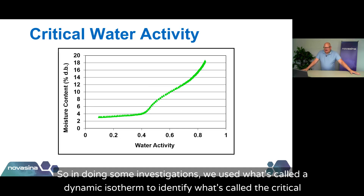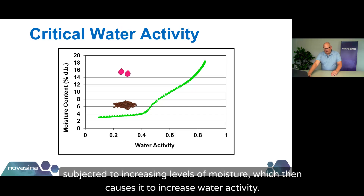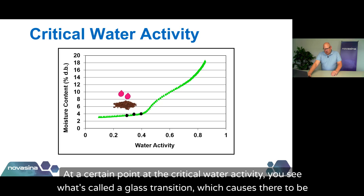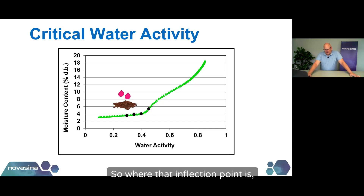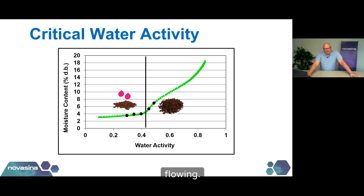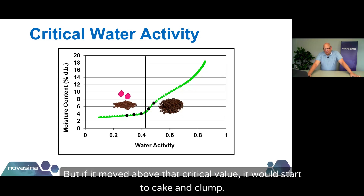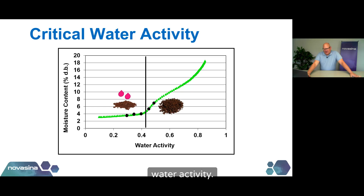Through investigation, we used what's called a dynamic isotherm to identify what's called the critical water activity. A free-flowing product is subjected to increasing levels of moisture, which causes it to increase water activity. At a certain point — the critical water activity — you see what's called a glass transition, which causes increased mobility within the product as well as increased availability of water binding sites. That's why there's a sharp inflection in the isotherm curve. Where that inflection point is, is what we call the critical water activity. As long as you keep the water activity of this powder less than that critical value, it will stay free-flowing. But if it moves above that critical value, it will start to cake and clump.